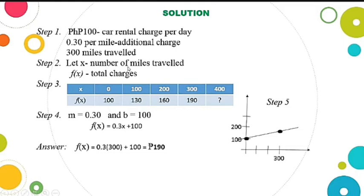Step 2: Let X be the number of miles traveled. So this is our independent variable. X is the number of miles traveled. Then what we're looking for or required is the total charges. Step 3: Let us create a table of values. This is it. So X is the number of miles traveled. If we haven't traveled any miles yet, we already have a car rental charge of 100 pesos.